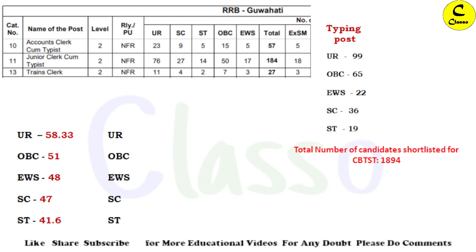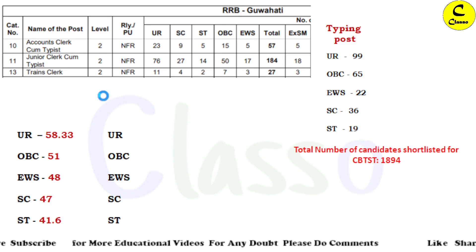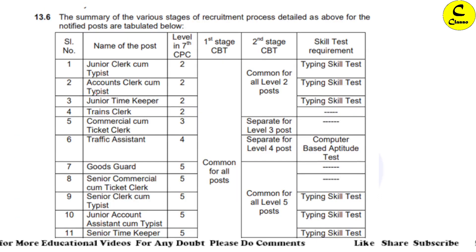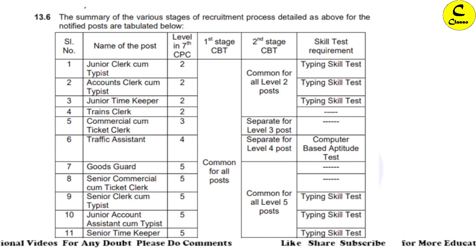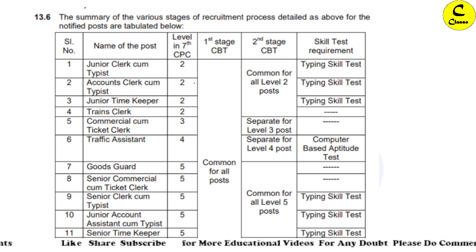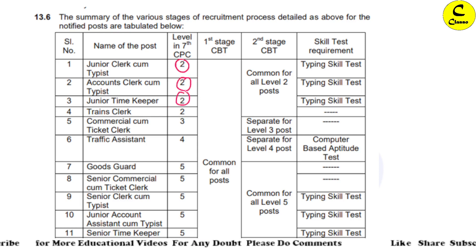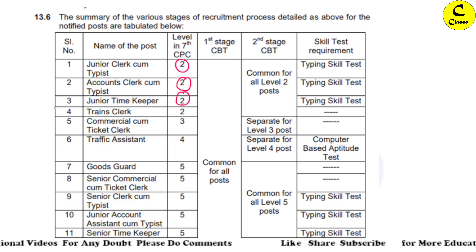In RRB NTPC Level 2, there are 4 posts. You have Junior Clerk Cum Typist, Account Clerk Cum Typist, Junior Timekeeper, and Train Clerk. There are 3 posts for typing and 1 non-typing post, which is Train Clerk.